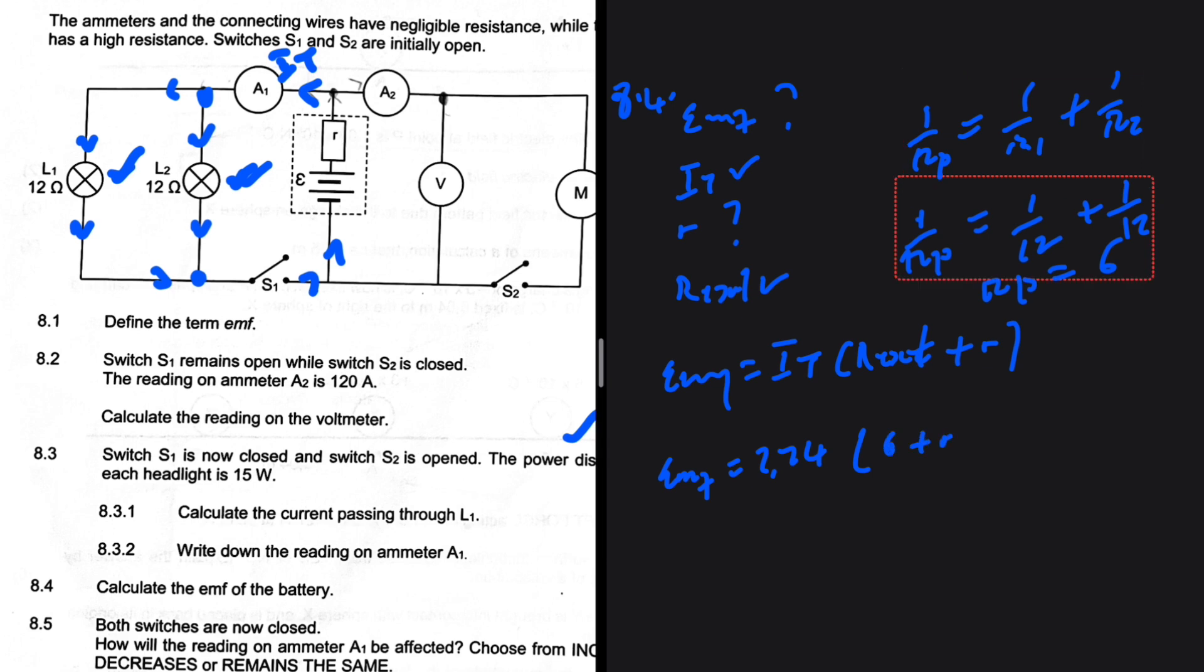So we have 6 plus R. 2 unknown variables, 1 equation. Equation 1. Obviously we need an equation 2 so that we can solve for the internal resistance and find the emf therefore.